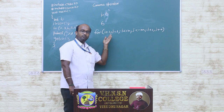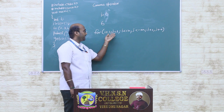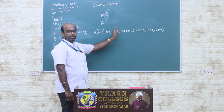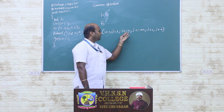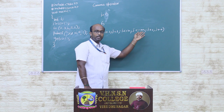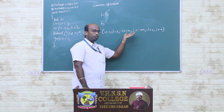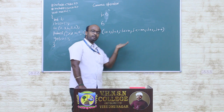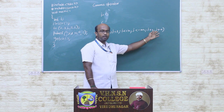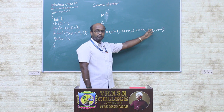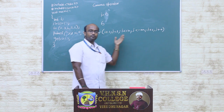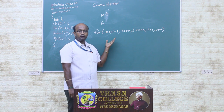So i is equal to 1 will be executed, and j is equal to 1 will also be executed. Then it checks the condition i less than or equal to n, after that it checks the condition j less than or equal to m. Once both the conditions are true, it executes the statement block. After execution, it comes to the increment part and executes i plus plus and j plus plus — so it executes every statement being separated by commas.